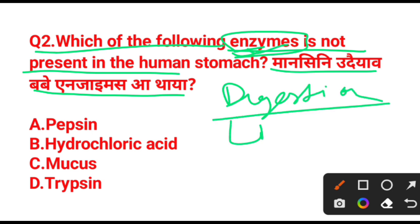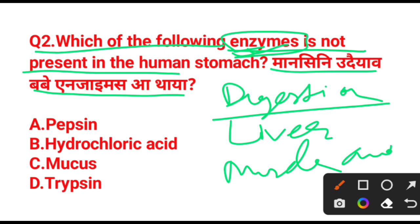The enzyme is not present. Enzymes can speed up the degree — they speed up biochemical reactions in the body. So, enzymes are not present here.